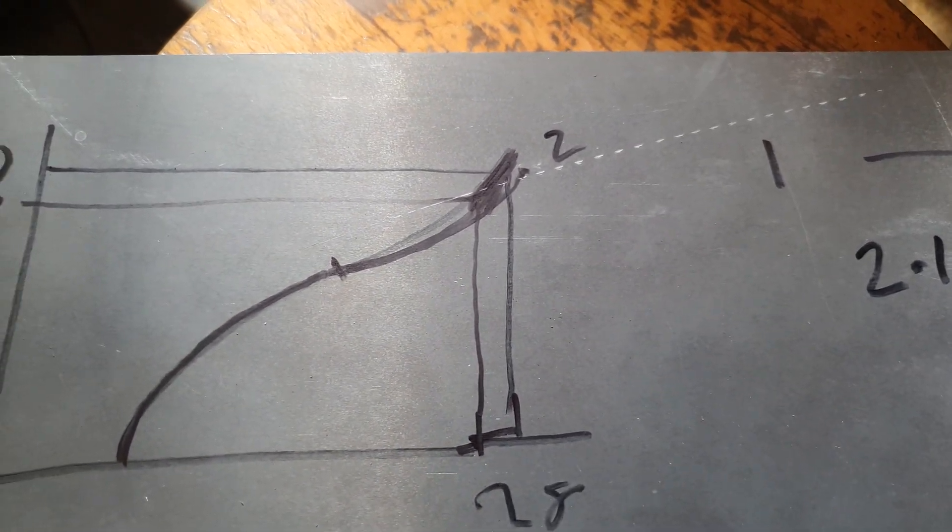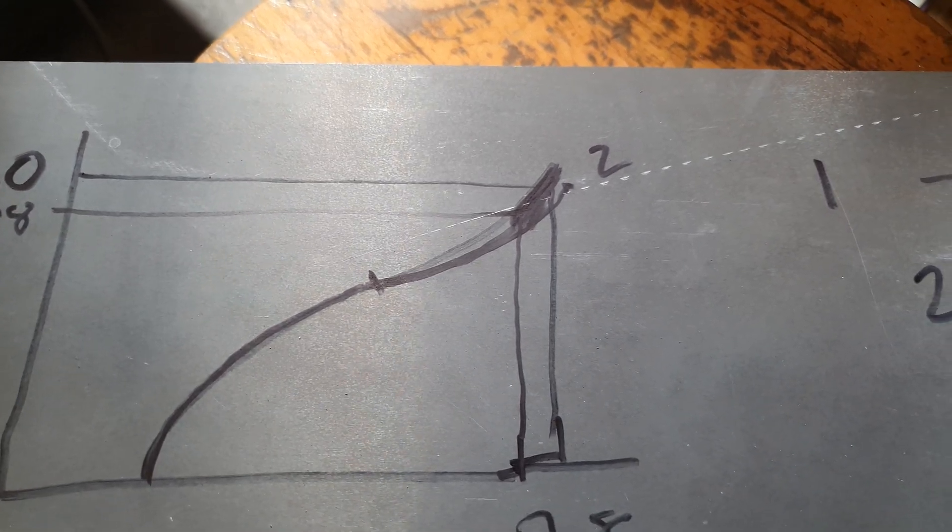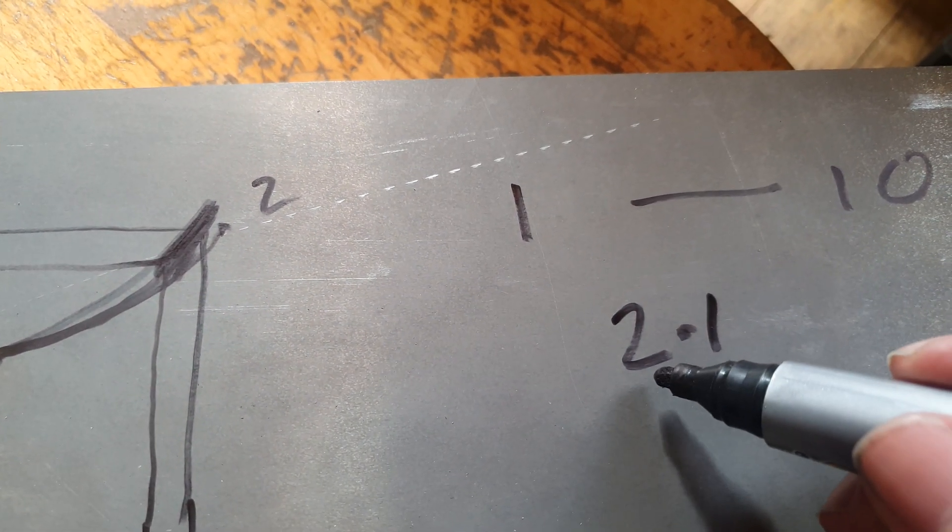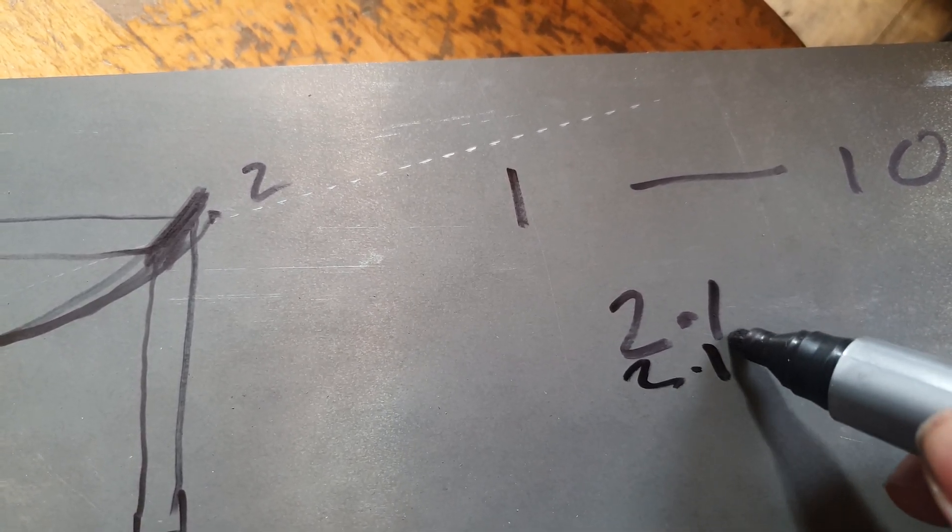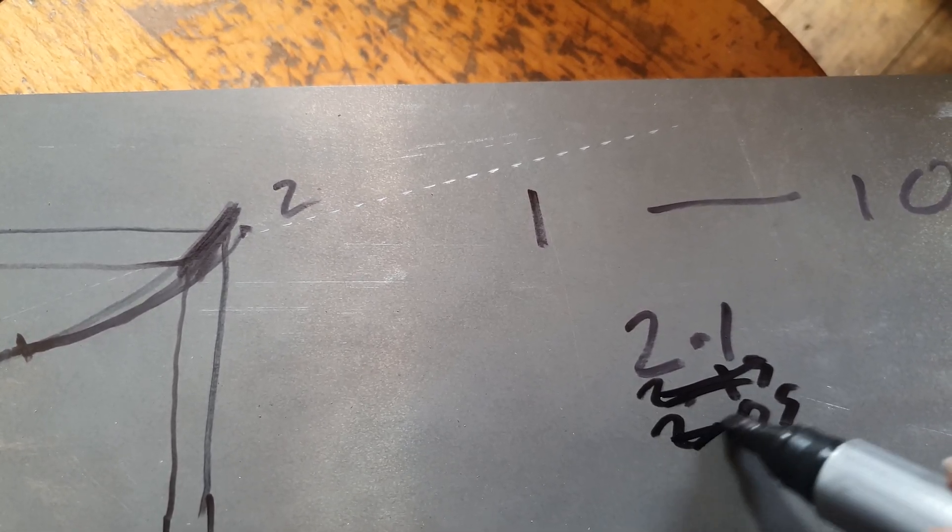It depends on the poundage, limb length, limb positions. What you'll find is most of the smooth limbs are between 2.15 to 2.05, so 2.1 for the sake of argument.